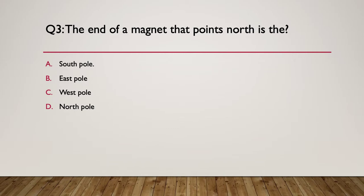Question three: the end of a magnet that points north is the what? Is it the south pole, the east pole, the west pole, or the north pole? Pause here while you answer. Here's your hint: how do magnetic fields align themselves? Our answer is the north pole, because it's aligning itself with the Earth's magnetic field.